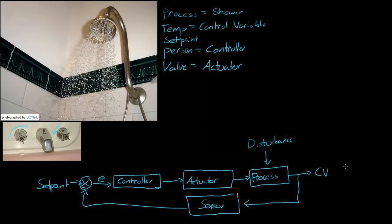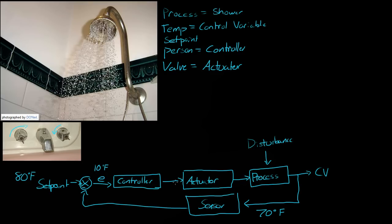Let's say we want the temperature of the water to be 80 degrees Fahrenheit, so the set point is 80 degrees Fahrenheit. Now let's say our control variable is actually only 70 degrees Fahrenheit. That means the error in our system — set point minus sensor — gives us 10 degrees Fahrenheit. So we as controllers change the actuator to change the process to get our control variable closer to our set point, and we do that over and over again until the error is as small as possible.